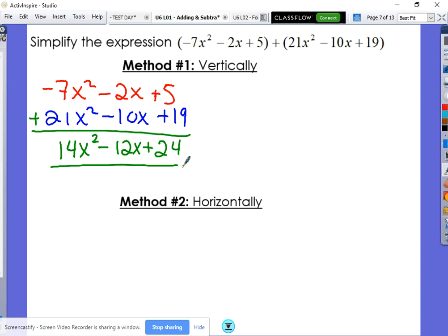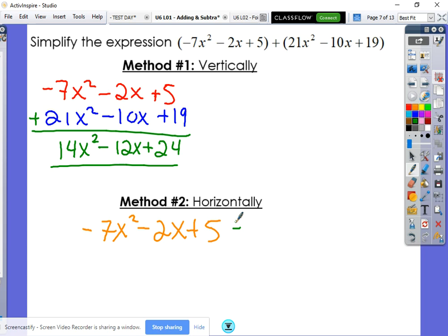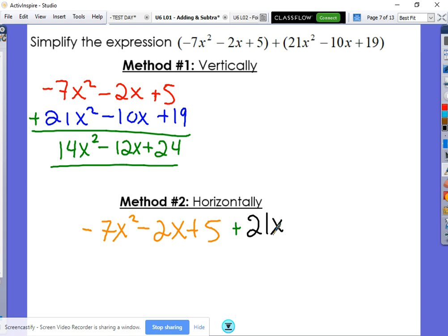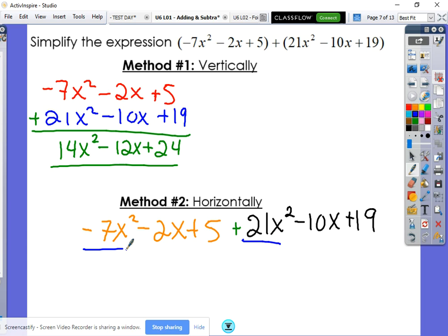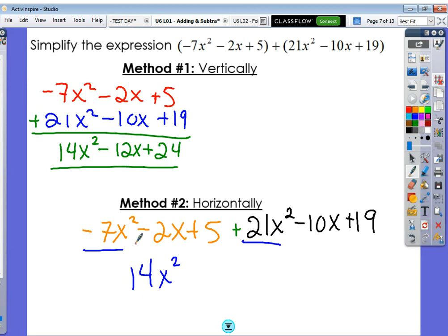Horizontally, same idea. You're simply combining those like terms. Negative 7x squared, minus 2x, plus 5, and you're just adding together with the 21x squared, and the negative 10x, plus 19. From there, we just combine those like terms. Right here, right here, gives us the 14x squared, combined with the negative 2x and the negative 10, gives us negative 12x. And then last but not least, positive 5, positive 19, gives us positive 24.